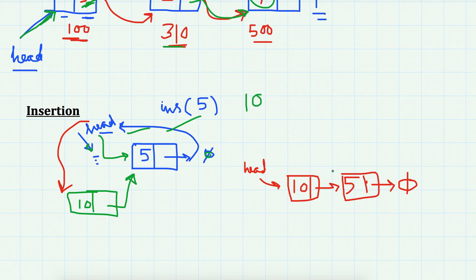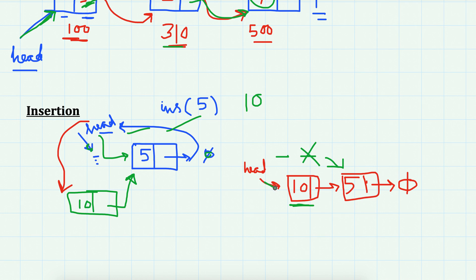Note that I am inserting the node in the beginning. That's why when we insert a node at the beginning, the head has to be updated, because head is always pointing to the first element. The last element that we inserted becomes the first element, so we move head from 5 to the new node, and the new node's next points to the earlier head.